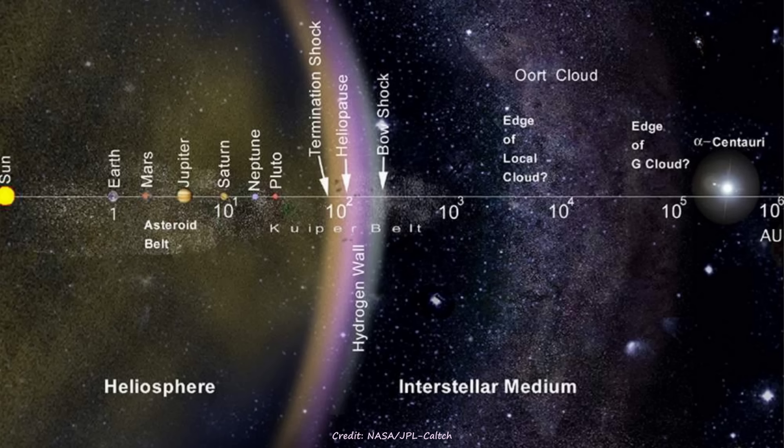So what even is the Oort Cloud? It's actually a cloud of comets, and the cloud is named after the Dutch astronomer Jan Oort. Now these comets are part of the solar system, but they are super distant from the sun — I'm talking about 2,000 AU out to almost 100,000 AU. Remember an AU is the distance between the sun and the earth, so we're talking way out there.